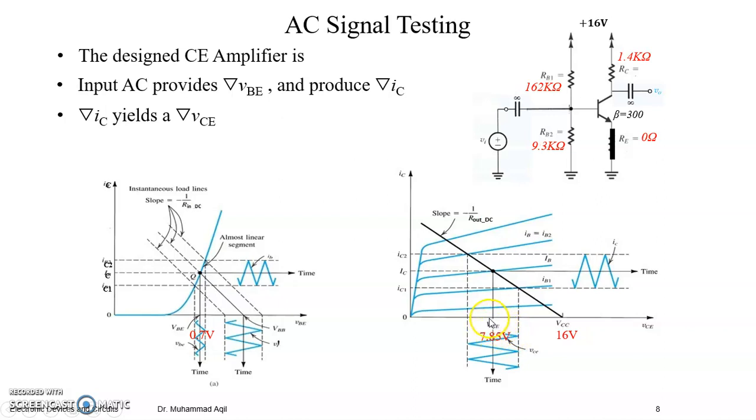And this AC VCE is changing about DC VCE, so actually total VCE is changing. This is what we have claimed right now, right? So this is changing.